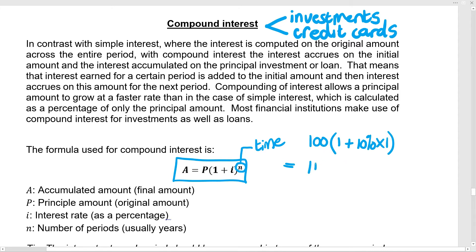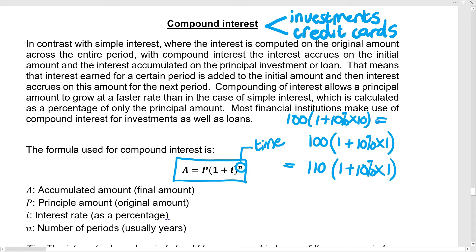We'll get our answer: it's going to be 10% more, so it's going to be R10 more, giving us R110. Now, with simple interest, all you would be doing is adding on R10 every single year. So once you've gone 10 years, you will then have R200 with simple interest. Let's prove it: 10%, 10 years — punch that into your calculator and you'll see it gets to R200.